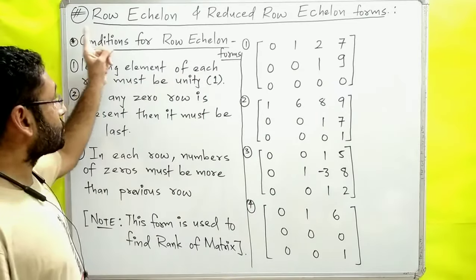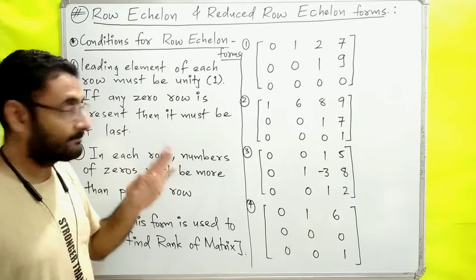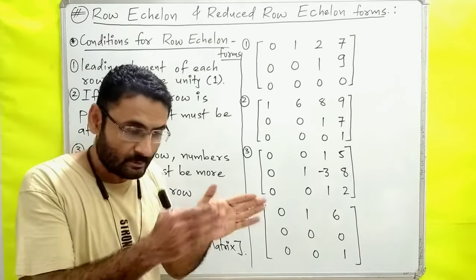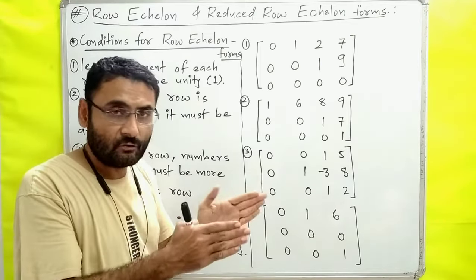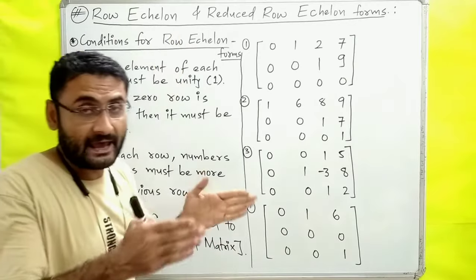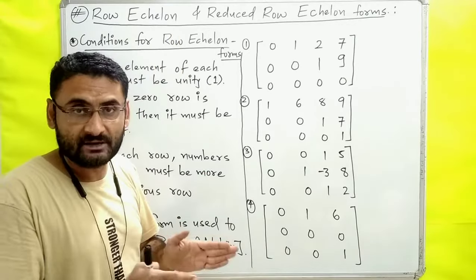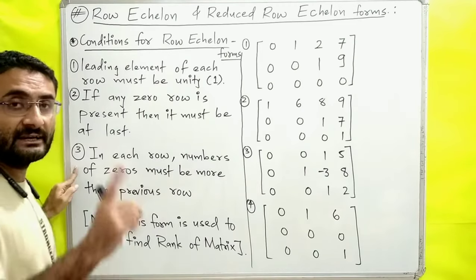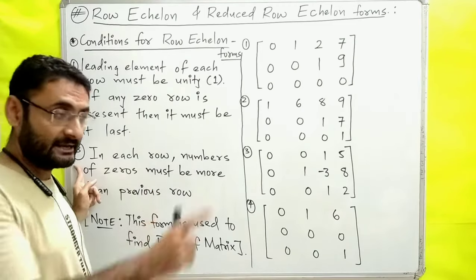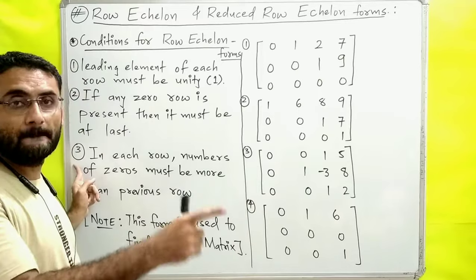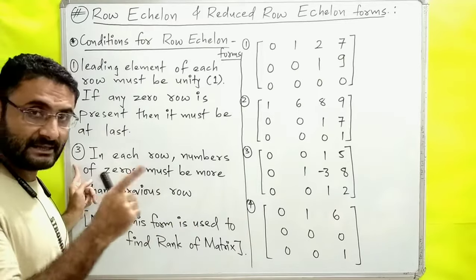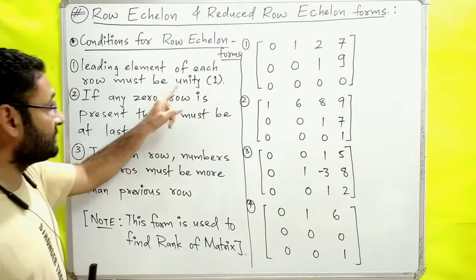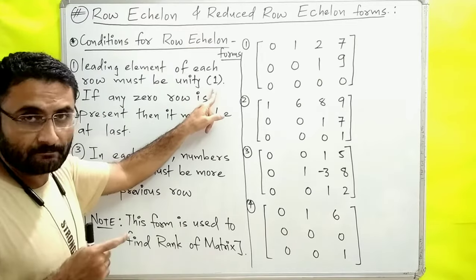First of all, we will talk about row echelon form. Here we are going to write the conditions for row echelon form. For whatever matrix we have, how do we check if it is in row echelon form? If three conditions are satisfied, then we will say that this matrix is in row echelon form. The first condition is: the leading element of each row must be unity — unity means one.